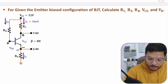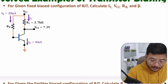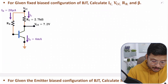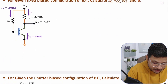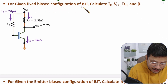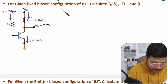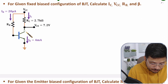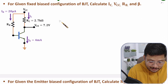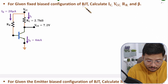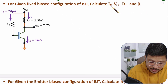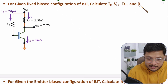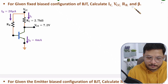Now I am going to solve the first question. In the first question, we have been given a fixed bias configuration of BJT. So here the circuit of fixed bias is given to us. We need to find IC, VCC, RB and β. So these are the parameters that we need to calculate.